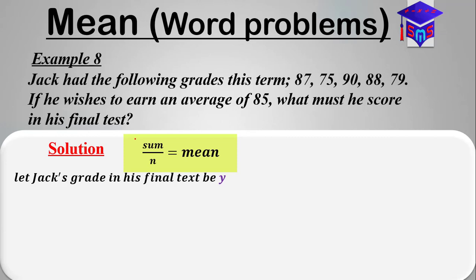Already in this question, we have been given the mean. The average has been given in the question. We also know n, the number of grades we have. One, two, three, four, five. When we add the final score y, then it means we're having six scores or six grades.